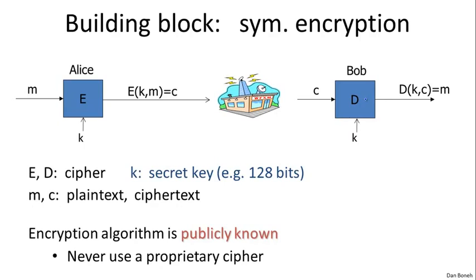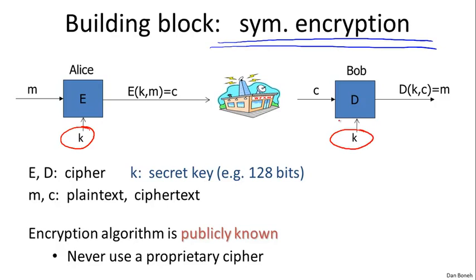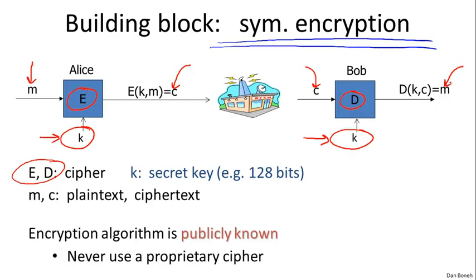The building block for securing traffic is what's called symmetric encryption systems. We're going to talk in the first half of the course extensively about symmetric encryption systems. In a symmetric encryption system, the two parties, Alice and Bob, share a secret key K, which the attacker does not know. Only they know the secret key K. They're going to use a cipher which consists of two algorithms, E and D. E is called an encryption algorithm, and D is called a decryption algorithm. The encryption algorithm takes the message and the key as input, and produces a corresponding ciphertext. And the decryption algorithm does the opposite — it takes the ciphertext as input along with the key, and produces the corresponding message.